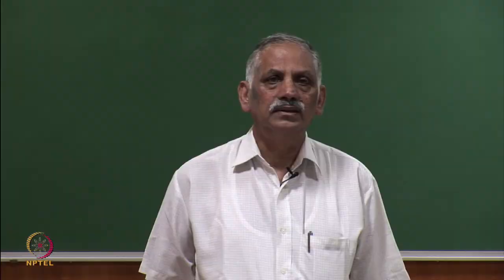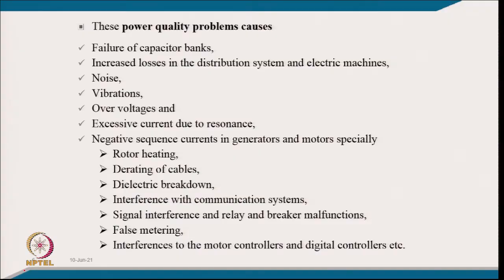Power quality problems also cause false metering because current and voltage are distorted, so estimating energy and other quantities in metering does not give exact readings corresponding to fundamental electric power. There has been a lot of litigation related to false metering, as well as interference with motor controllers and digital controls used in most motor controllers today.